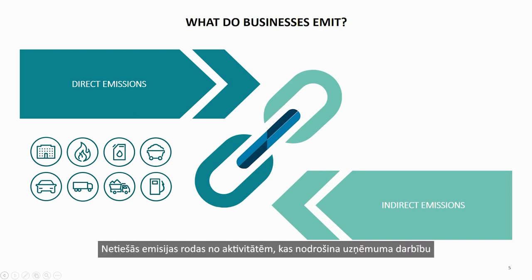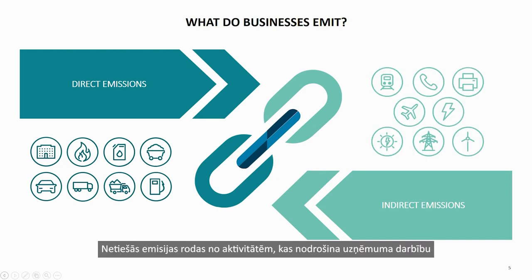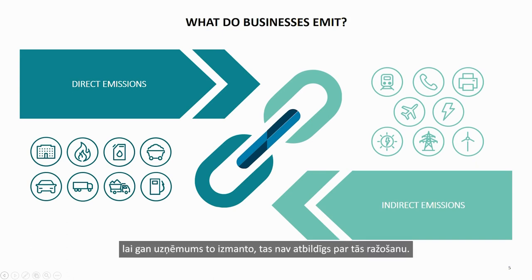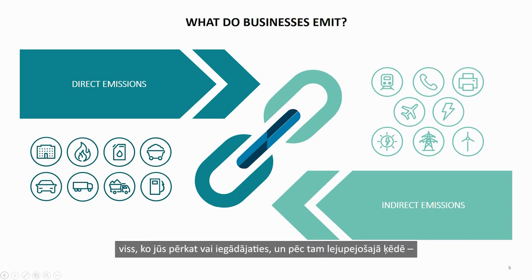Indirect emissions come from activities that support company operations and are outside of your direct control — for example, electricity. While our company uses it, you are not responsible for producing it. Indirect emissions can be further distinguished by upstream, meaning everything you purchase or acquire, and downstream, meaning everything related to sold goods and services.